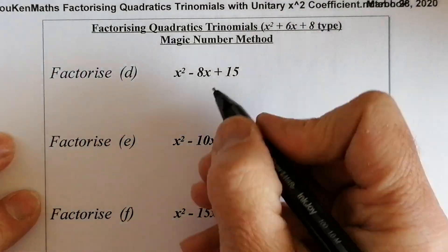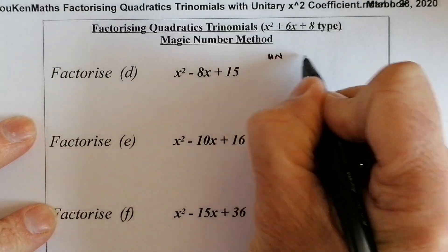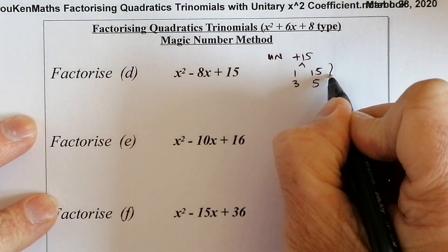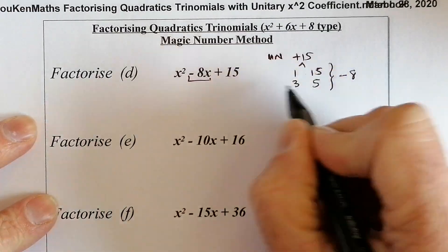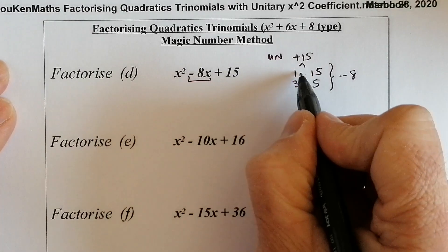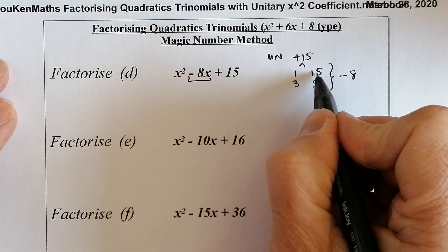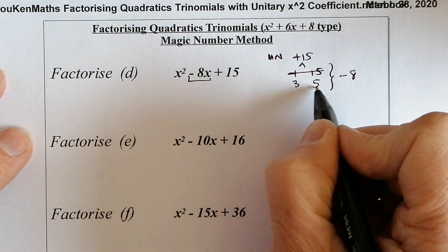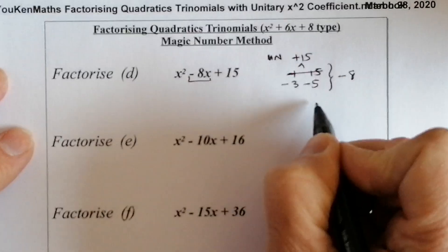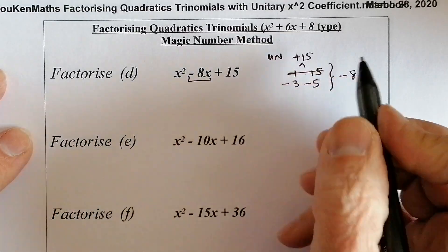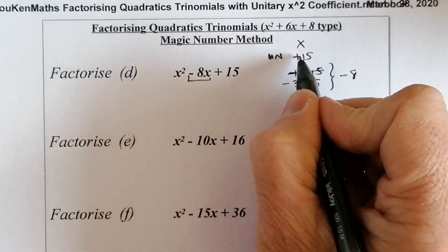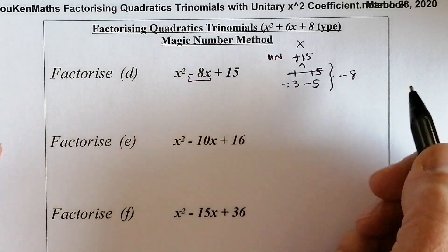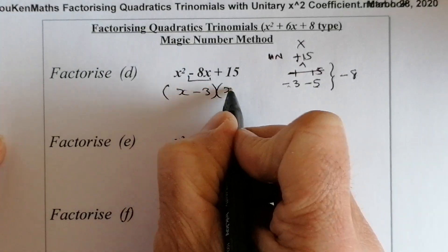Now for questions with negatives. First one: magic number is positive 15. Factors of 15: 1 and 15, 3 and 5. I'm trying to make minus 8. Since the magic number is positive, both numbers are the same sign — both negative here. A negative 5 and negative 3 gather to make minus 8. So the answer is (x − 3)(x − 5).